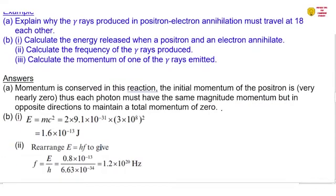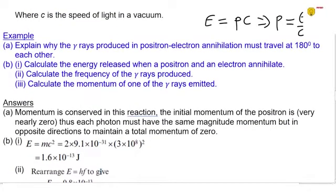Example. Explain why the gamma rays produced in positron-electron annihilation must travel at 180 degrees to each other. Also, calculate the energy released when a positron and an electron annihilate. Calculate the frequency of the gamma rays produced. Calculate the momentum of one of the gamma rays emitted as well. Now, the answer to the first one, why the gamma rays produced in positron-electron annihilation must travel at 180 degrees to each other. This is because momentum is conserved in the reaction. So the initial momentum of the positron, which is nearly zero, thus each photon must have the same magnitude momentum but in opposite directions to maintain a total momentum of zero.